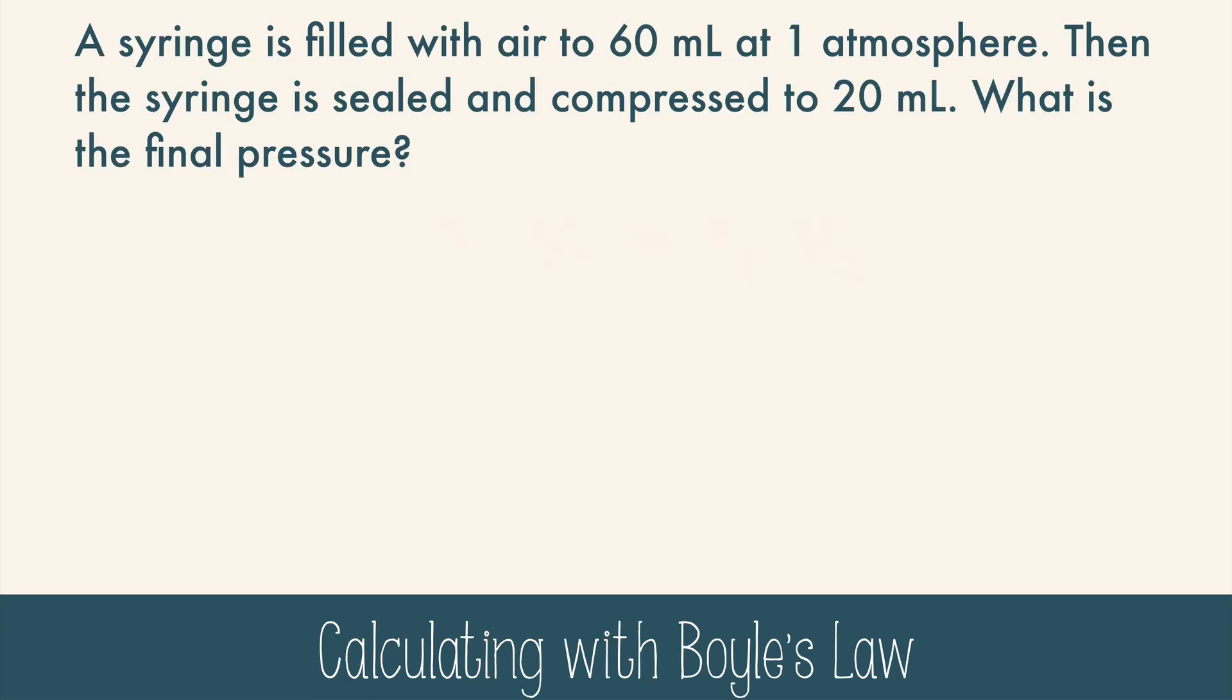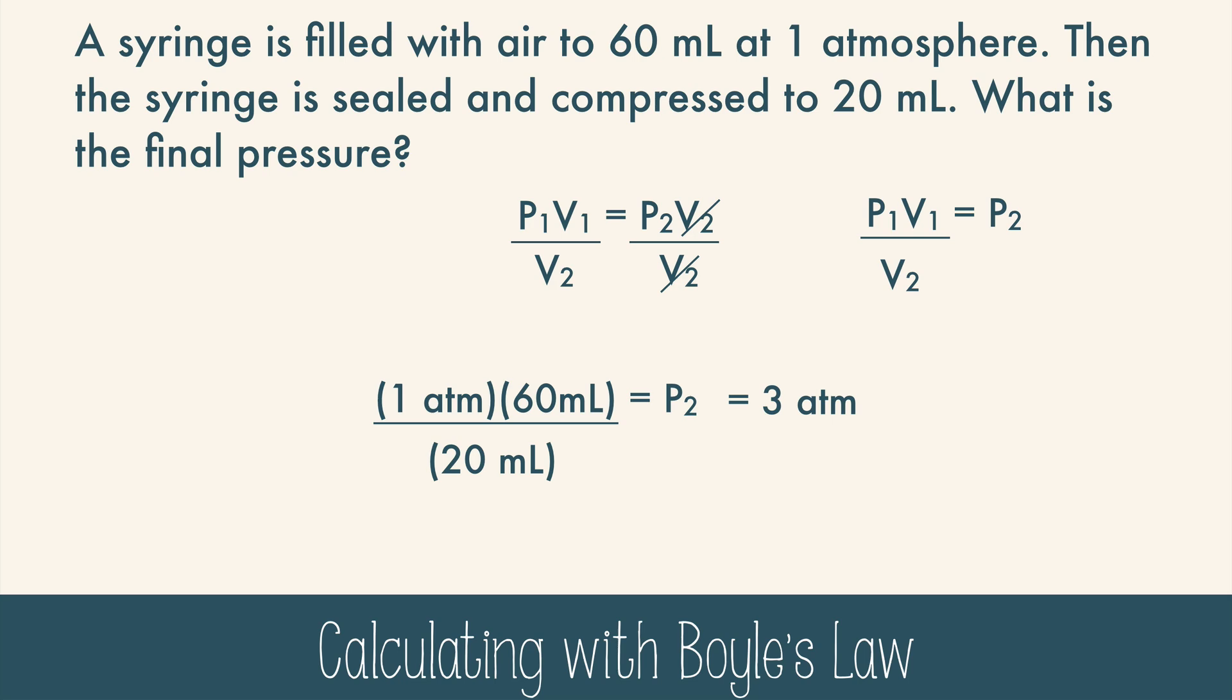Let's try using it. A syringe is filled with air to 60 milliliters at 1 atmosphere. Then the syringe is sealed and compressed to 20 milliliters. What is the final pressure? Using Boyle's law, P1 V1 equals P2 V2, you can rearrange this equation now or after plugging in the numbers. It doesn't matter, but for neatness, I'm going to rearrange it now. I need the final pressure, or P2, so I'm going to get that isolated by dividing both sides by V2. Then clean it up and plug in the data. And you get three atmospheres. Do a concept check to see if that makes sense. Volume went down, pressure went up. That's inverse. Yep, it makes sense.